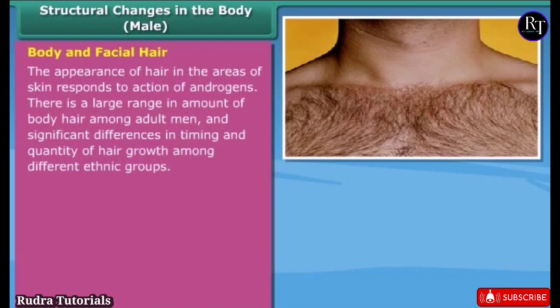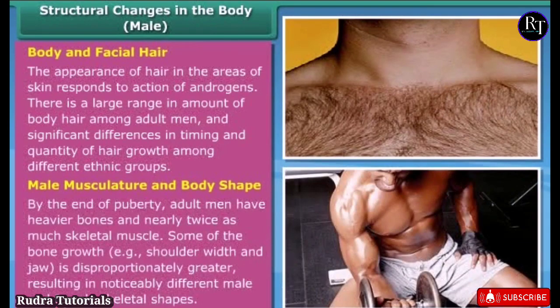There is a large range in the amount of body hair among adult men. By the end of puberty, adult men have heavier bones and nearly twice as much skeletal muscle. Some bone growth, such as shoulder width and jaw, is disproportionately greater, resulting in noticeably different male and female skeletal shapes.